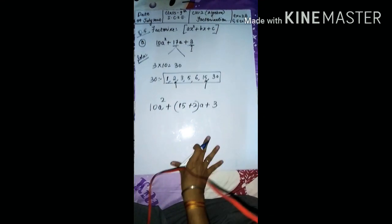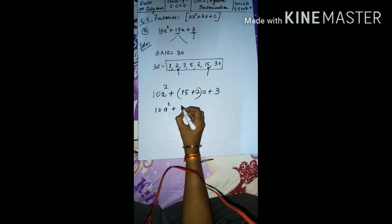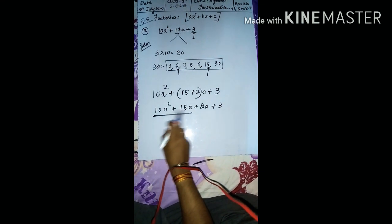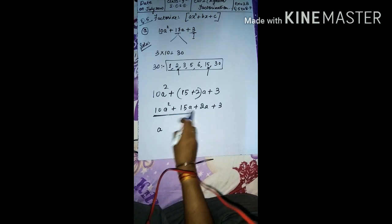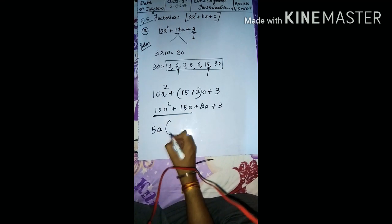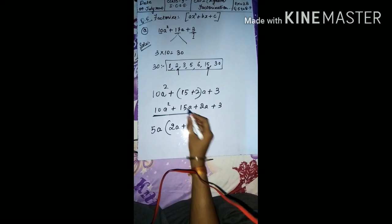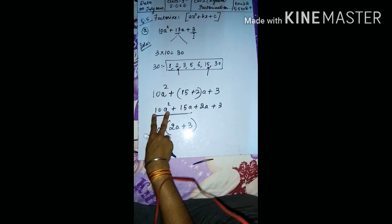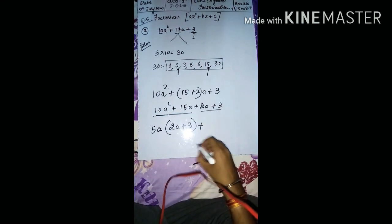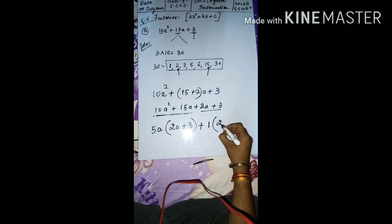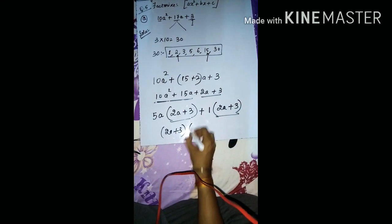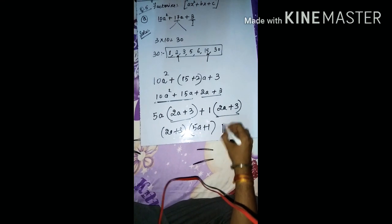So we write: 10a² + 15a + 2a + 3. Now take common from each pair. From the first two, take 5a common: 5a(2a + 3). From the last two, take 1 common: 1(2a + 3). Now take (2a + 3) common, and we are left with (2a + 3)(5a + 1). This is your final answer.